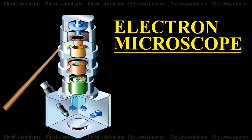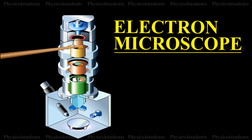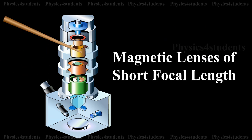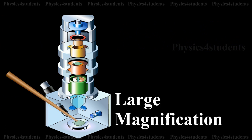The modern electron microscope is usually of transmission type in which the magnetic lenses of short focal length are used to obtain large magnification.